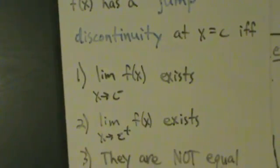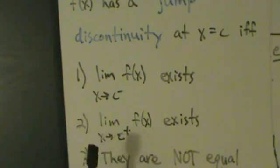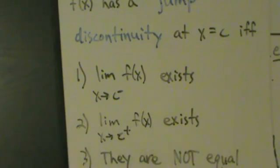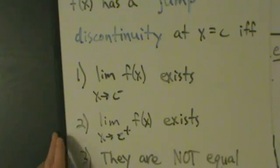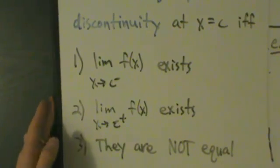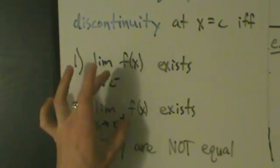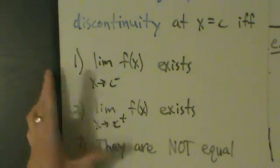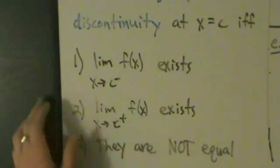Notice that it doesn't matter if the function is defined at c or not. Remember for removable discontinuity, one of the conditions was that the function had to be defined at c — in other words, f of c had to exist. But for jump discontinuities, it doesn't actually matter. All you need is both one-sided limits existing and them not being equal to each other. Let's see an example of that.